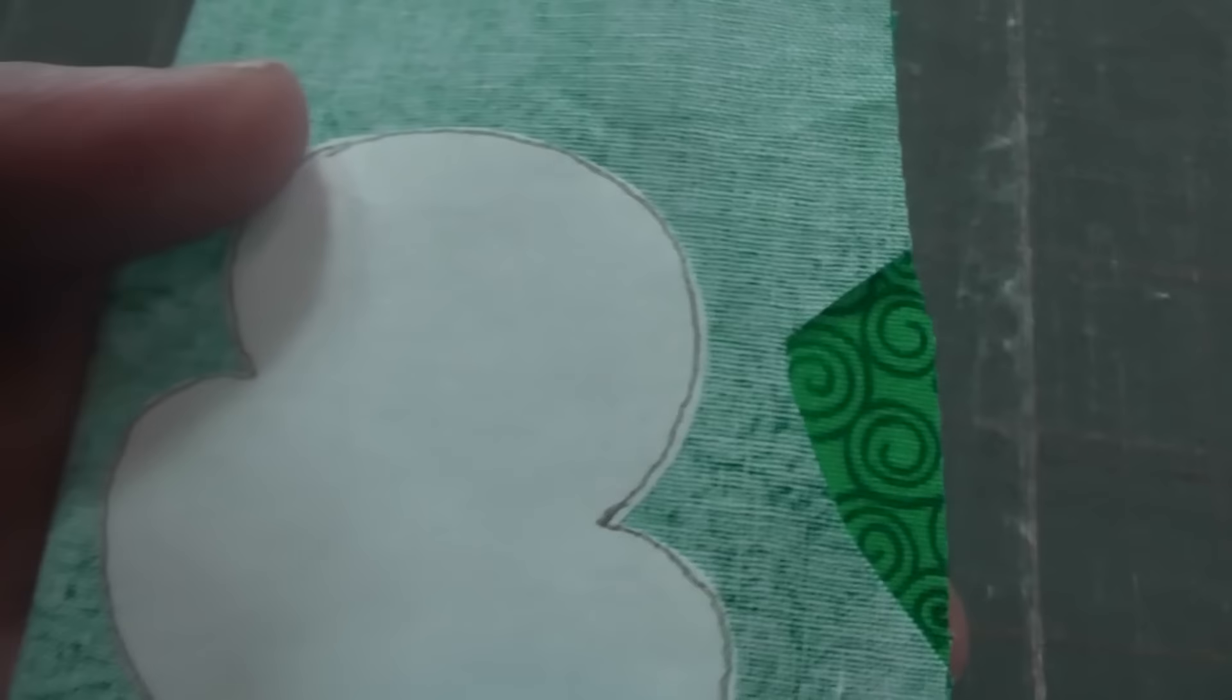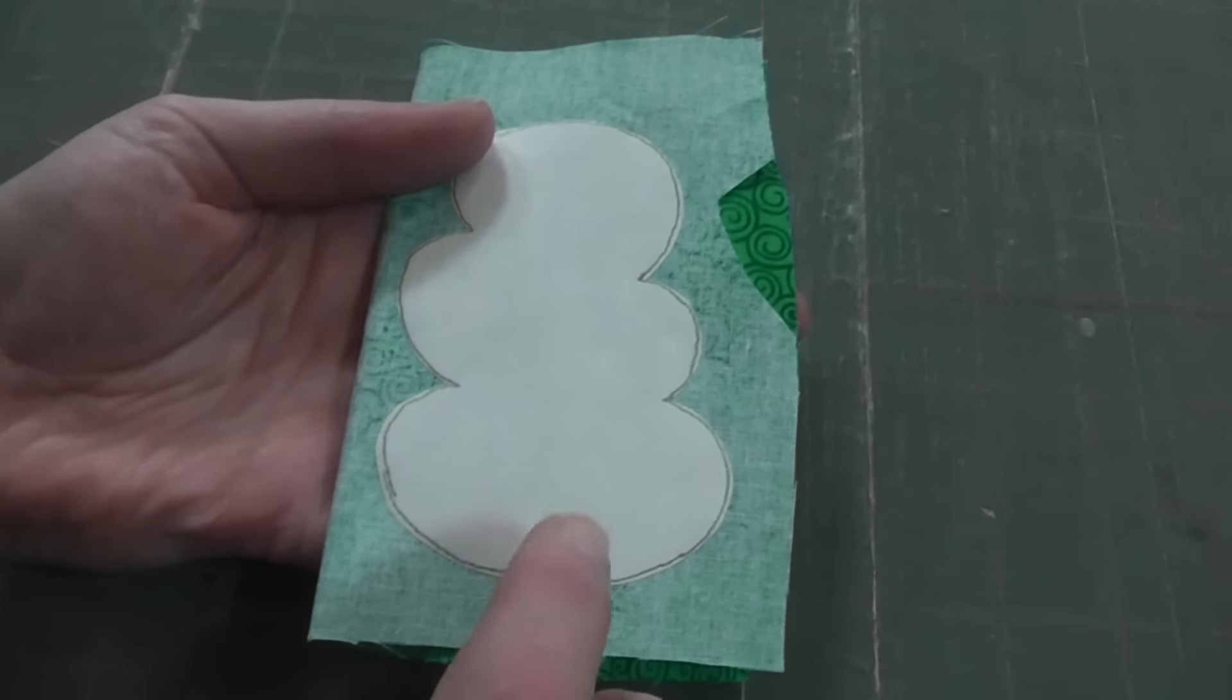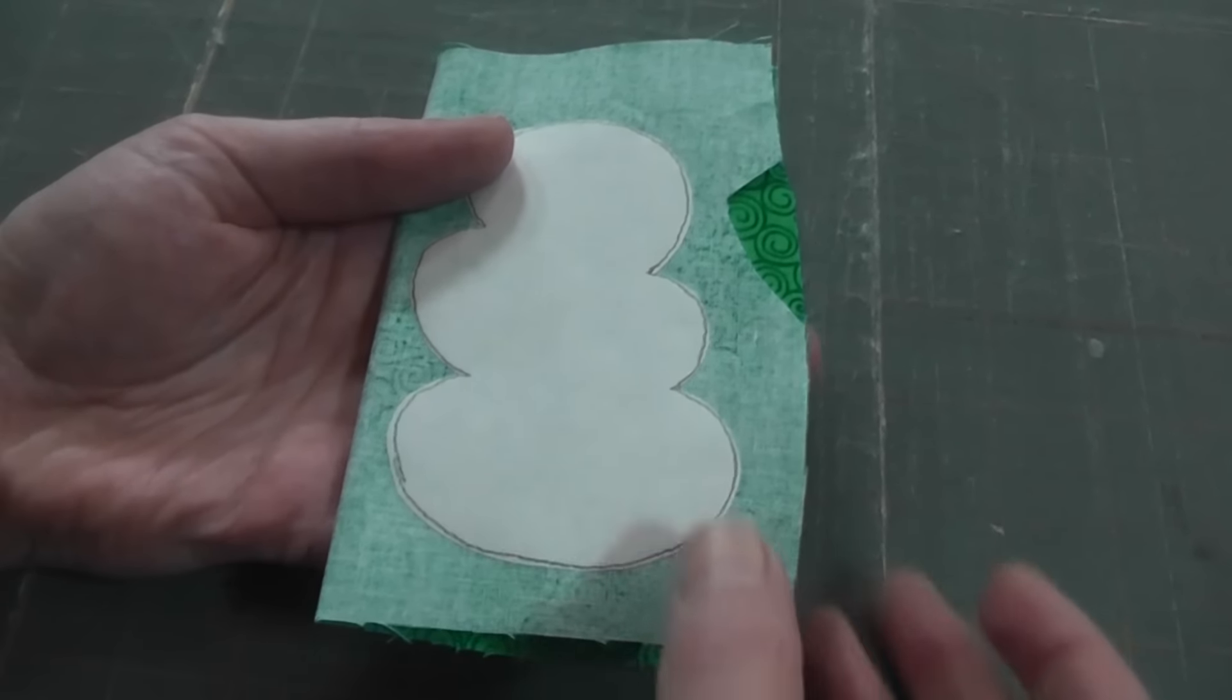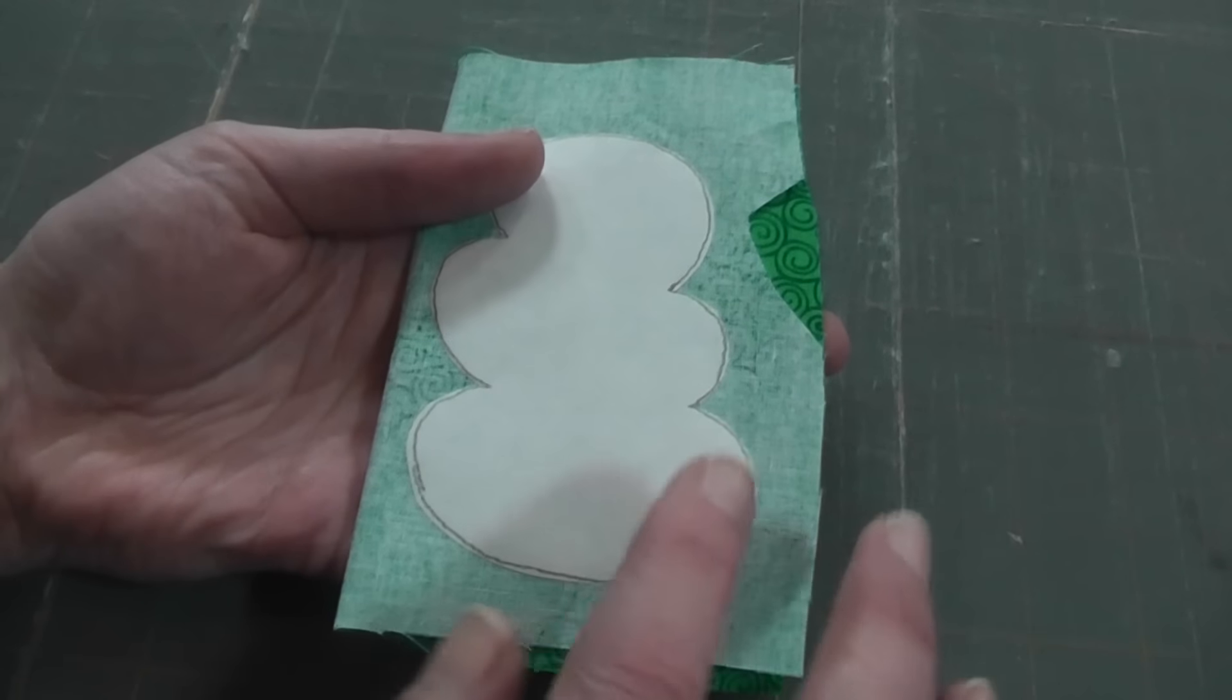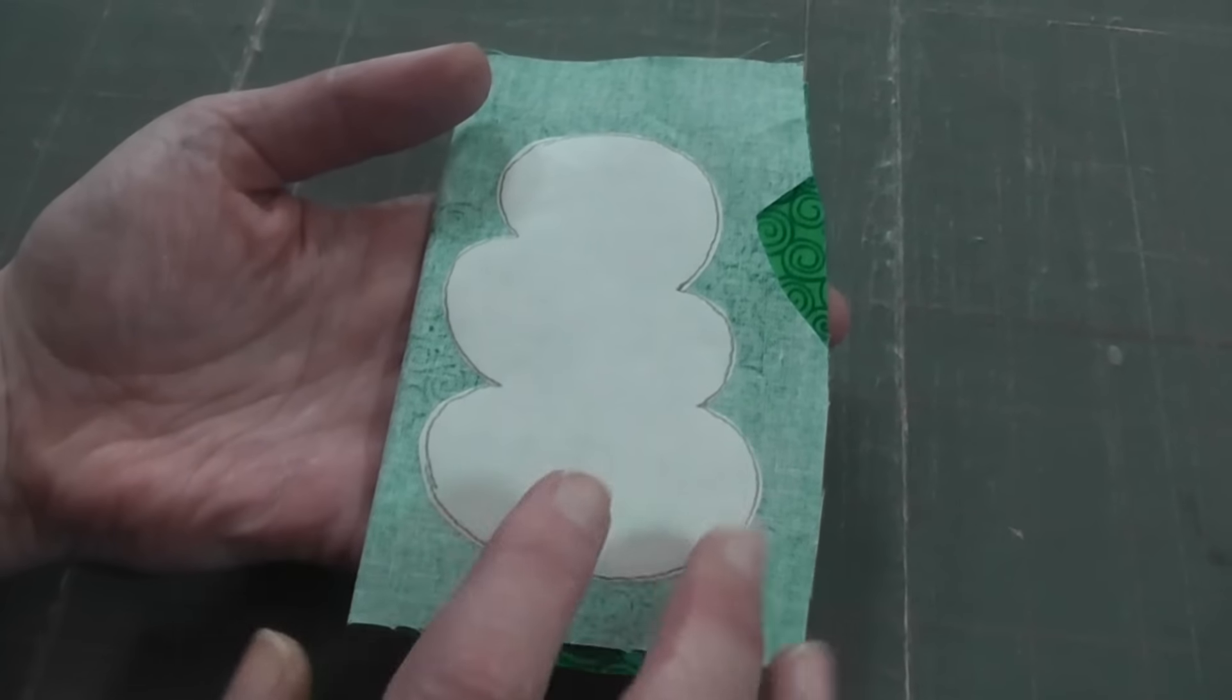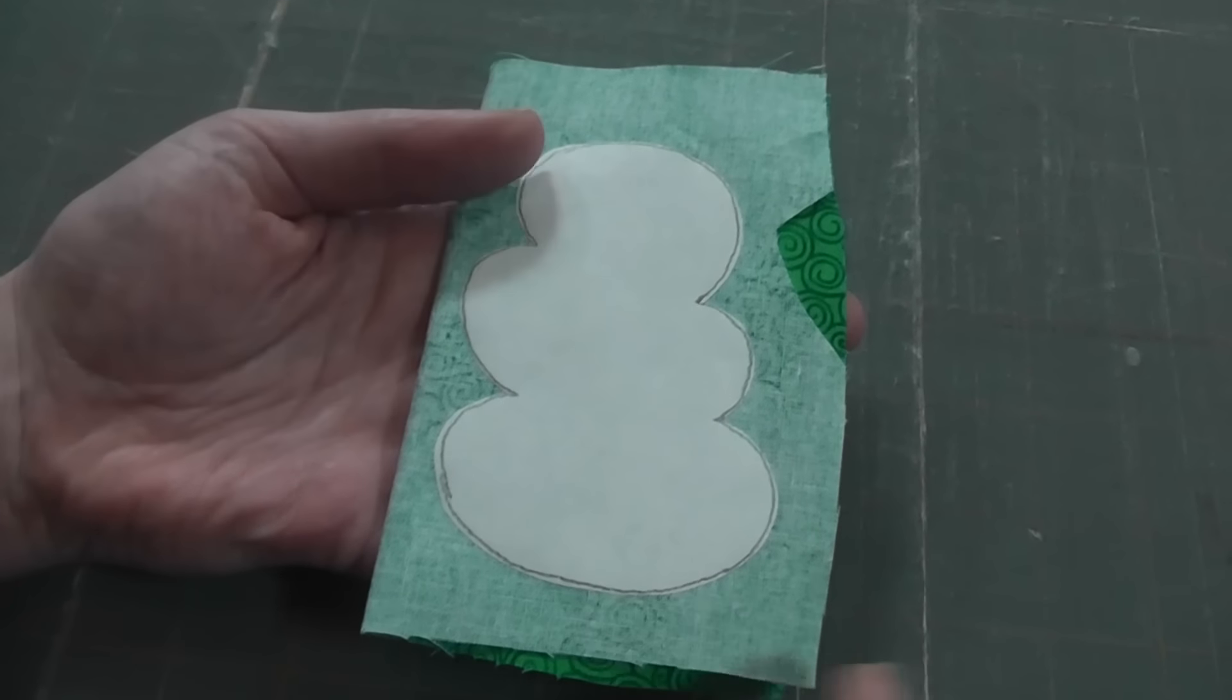Freezer paper is really great. You can buy it at the grocery stores here in the US. It can be a little harder to find in other countries. But it's papery on one side and plasticky on the back side. What's wonderful about it for quilting is that you can iron it to fabric and it'll stick temporarily while you sew around it, and then you can peel it off and it doesn't leave any residue behind.